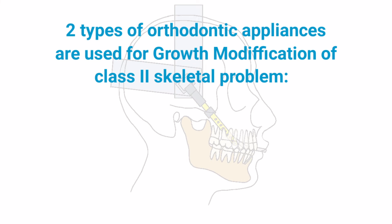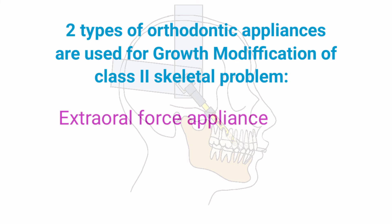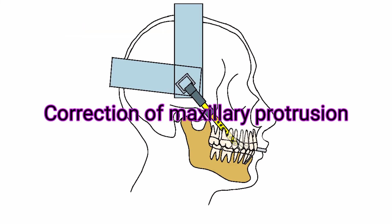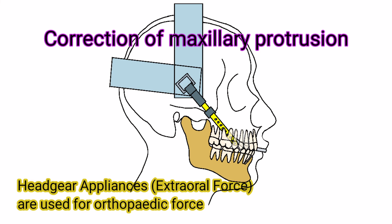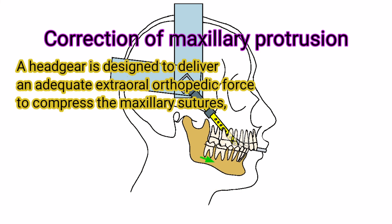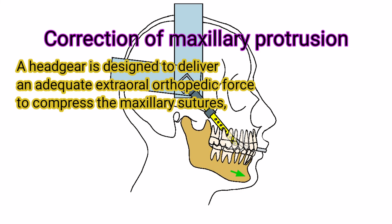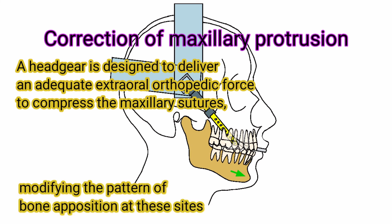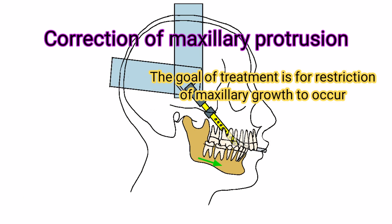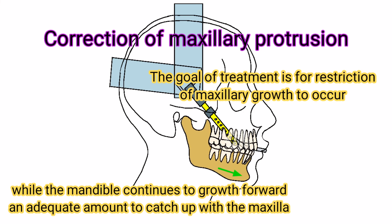Basically, two types of orthodontic appliances are used for growth modification of Class II skeletal problems: Extraoral Force Appliance and Functional Appliance. Correction of Maxillary Protrusion: Headgear appliances are used for orthopedic force growth inhibition of the maxilla. A headgear is designed to deliver adequate extraoral orthopedic force to compress the maxillary sutures, modifying the pattern of bone apposition at the site. The goal of treatment is for restriction of maxillary growth to occur while the mandible continues to grow forward an adequate amount to catch up with the maxilla.